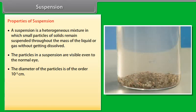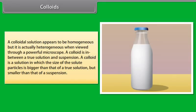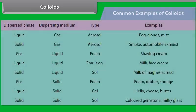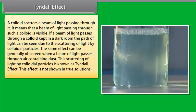Sugar solution is a clear liquid and we cannot distinguish the sugar particles from the water molecules even with a microscope. Some examples of solutions are salt solution, sugar solution, copper sulfate solution, and a solution of acetic acid in water, which is vinegar. The liquid in which the substance is dissolved is called the solvent. The substance which dissolves in the solvent to produce a solution is called the solute. In sugar solution, sugar is the solute whereas water is the solvent. Generally, the amount of solute present is lower than that of the solvent.